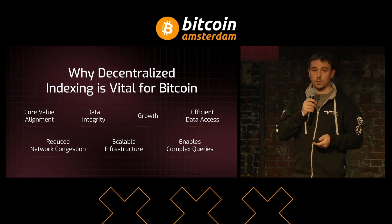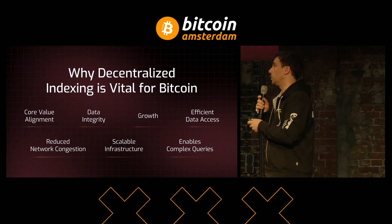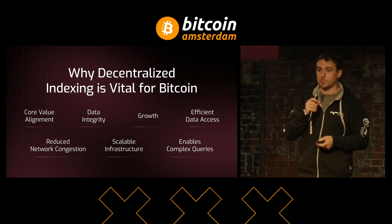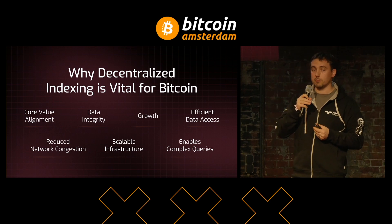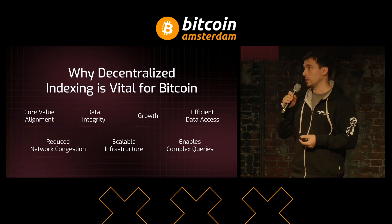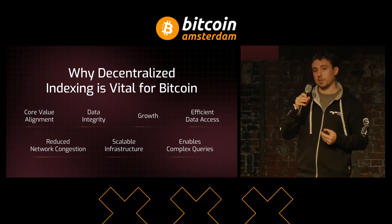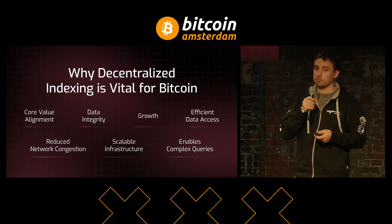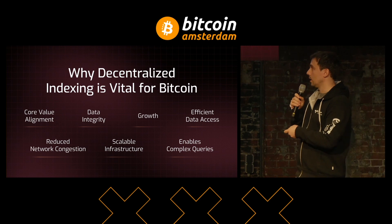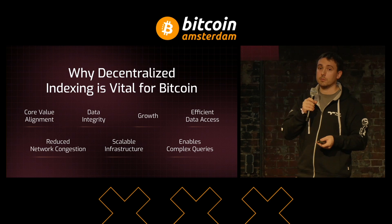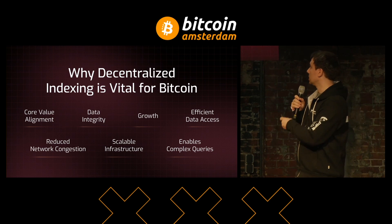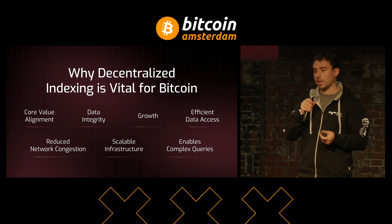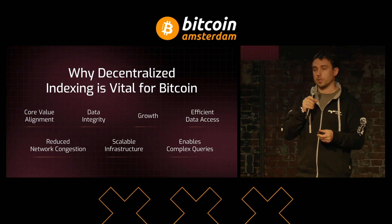We get data integrity by cross-checking data across the whole network, ensuring that what is being passed is actually the truth. Growth is probably the largest aspect at the moment: with the increased number of blocks for Bitcoin, there is an increase as well in the amount of data being processed. We can simply scale up the network of indexers by adding more nodes. Efficient data access, reduced network congestion — plugging in more validators avoids super-congested situations. Scalable infrastructure — plugging more validators means more trust. And it enables complex queries: having a decentralized network enables processing of more algorithms on top of Bitcoin.